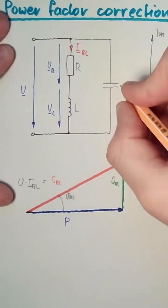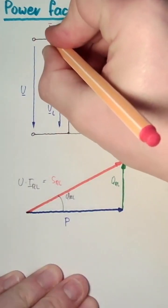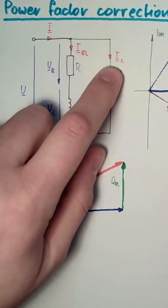We will add a capacitor, of course, in parallel. Here I have then passing through an IC with an I, which is now the sum of R-L and IC.